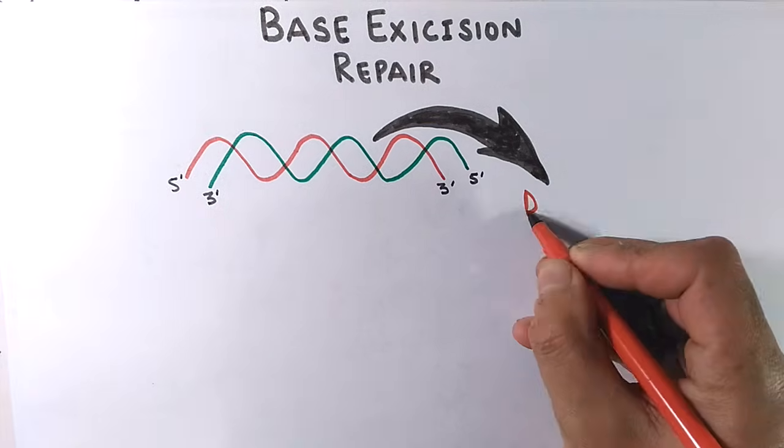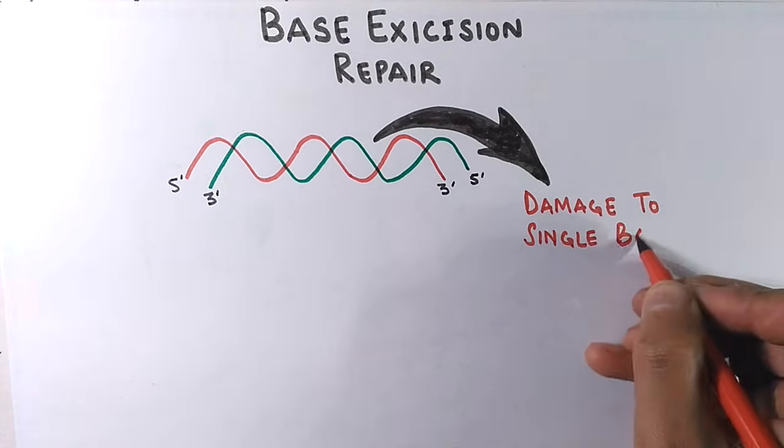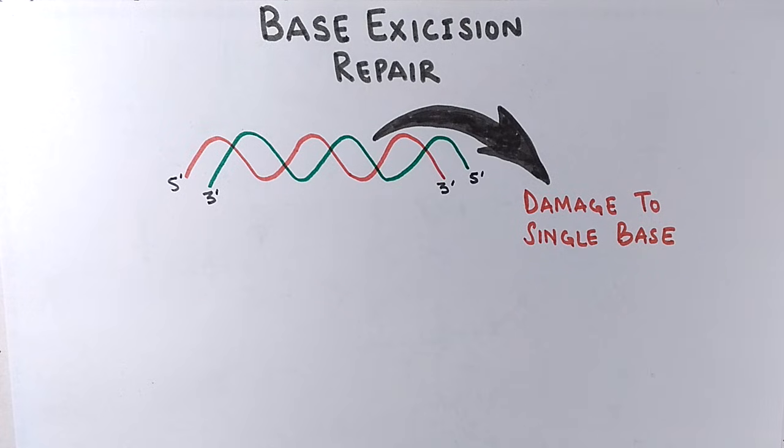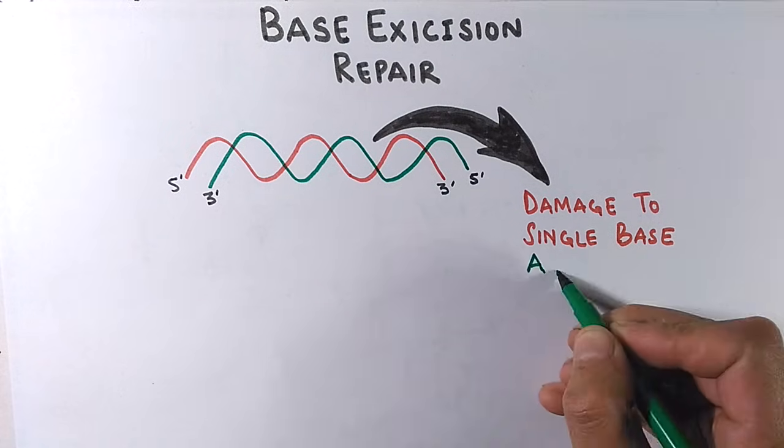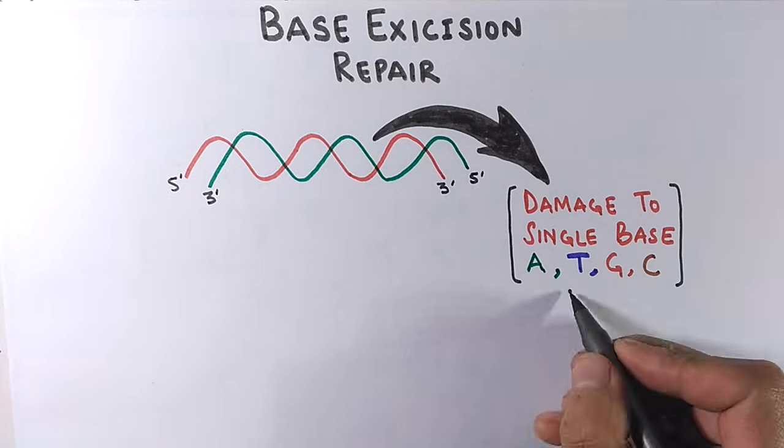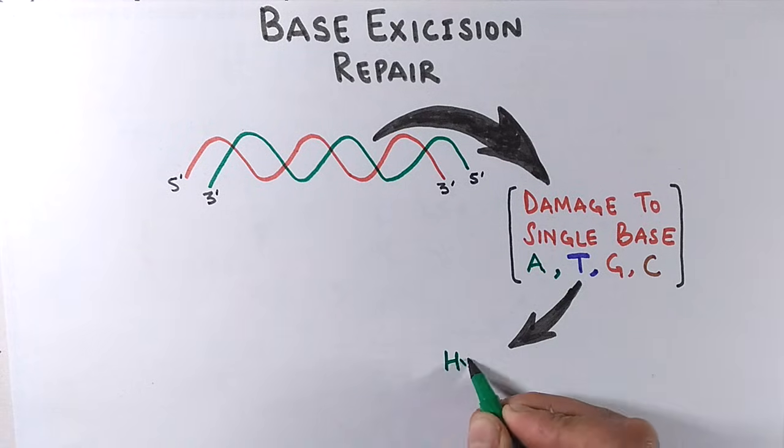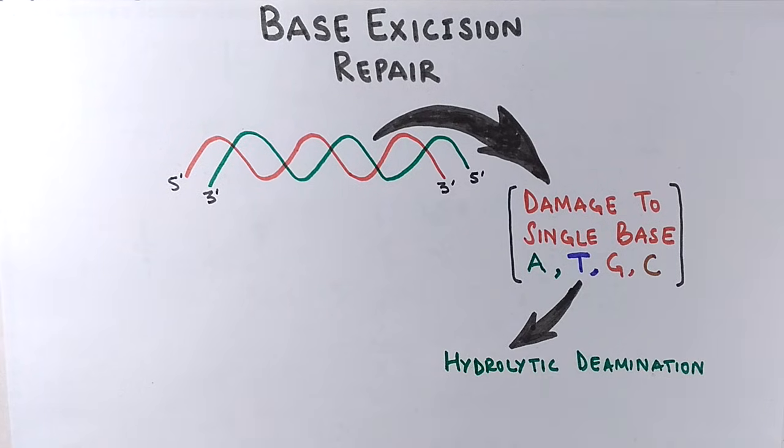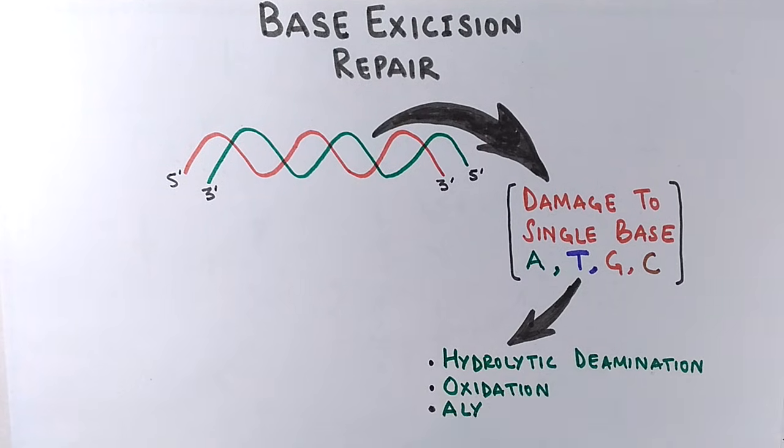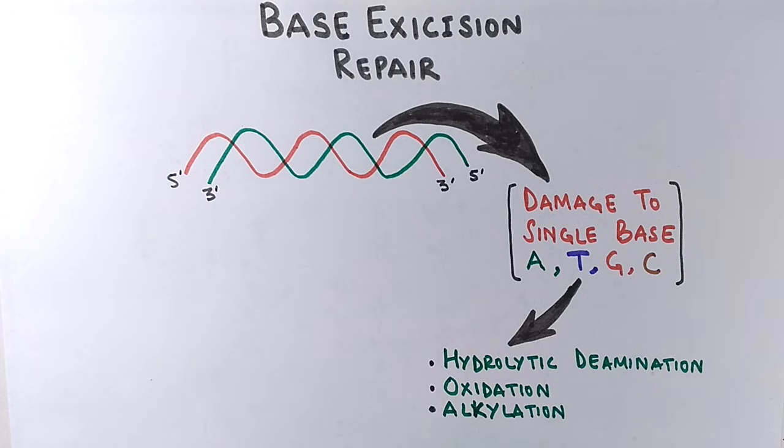Most of the time we see single base gets damaged among the four bases—A, T, G, C: adenine, thymine, guanine, and cytosine. The single base damage is mediated by hydrolytic deamination, oxidation, and alkylation, but hydrolytic deamination is more pronounced.